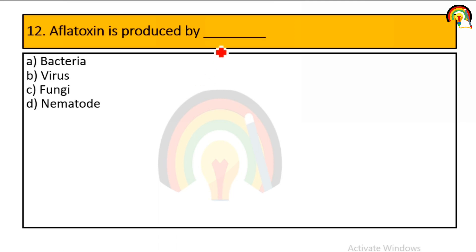This is a very important question: aflatoxin is produced by bacteria, virus, fungi, or nematode? Aflatoxin is produced by fungi — that is option C.